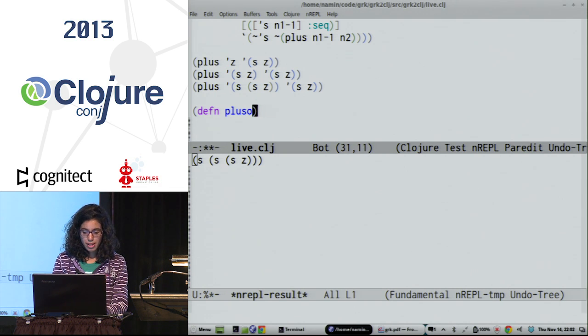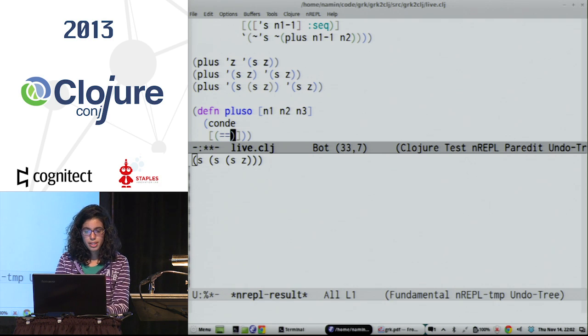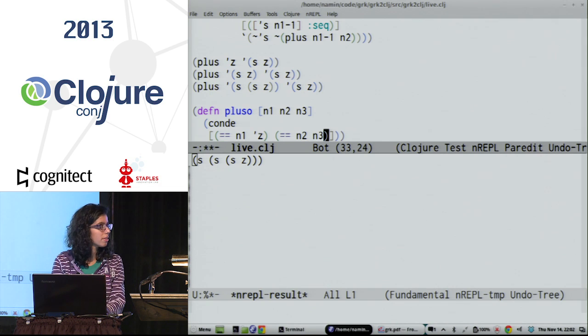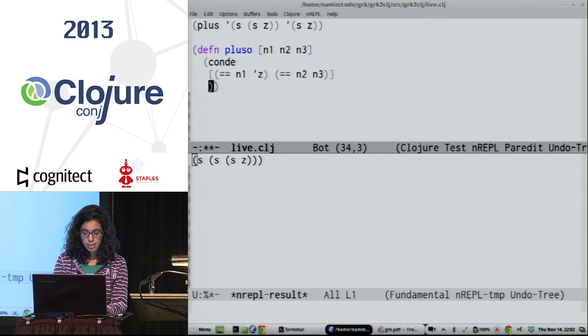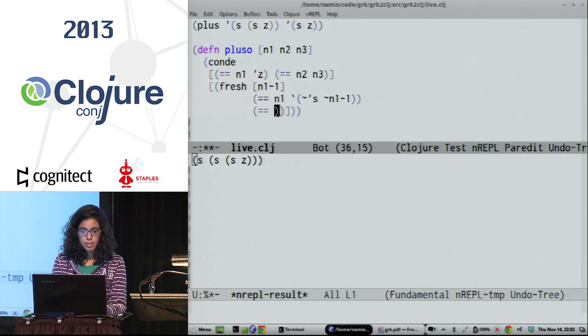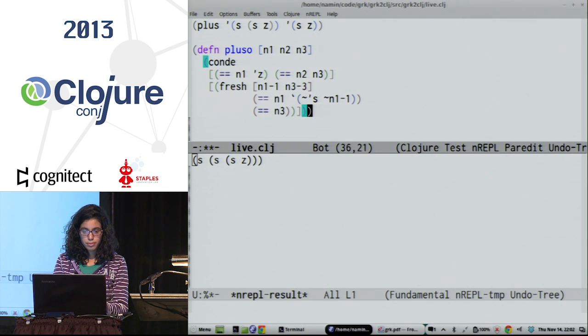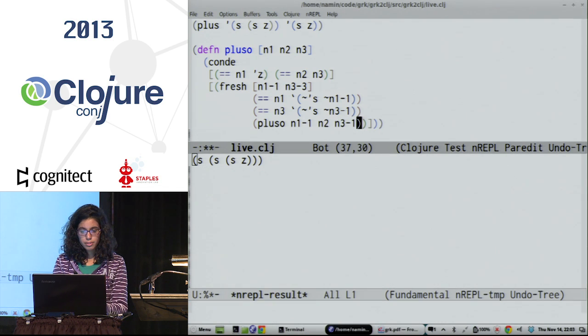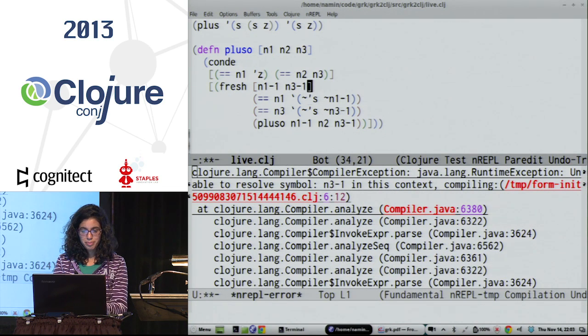So now we can do it in core.logic. So let's do a plusO this time. And how many arguments does this take? Three. It's a three-place relation. So again, a conde. And so in the first case, we just say N1 is Z, and then N2 is N3. That was the axiom. And in the second case, we say N1 is a successor, and then we say the result is also going to be a successor. And then we need to do the recursive constraint.